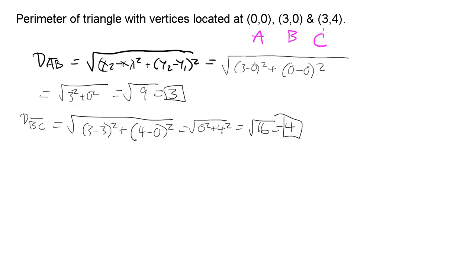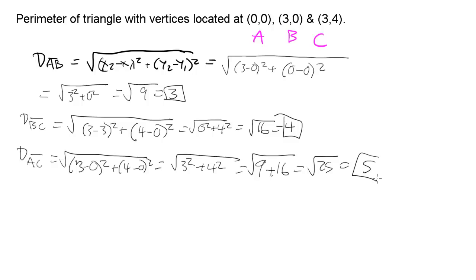Lastly, we'll do C and A. This will be our x1, y1. This will be our x2, y2. So distance of AC will be the square root of 3 minus 0 squared plus 4 minus 0 squared. And that's going to be the square root of 3 squared plus 4 squared, square root of 9 plus 16, square root of 25, which is 5.